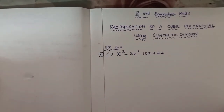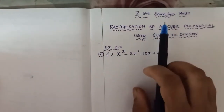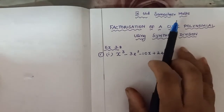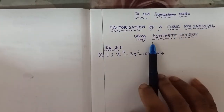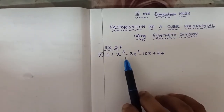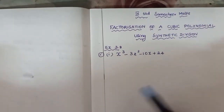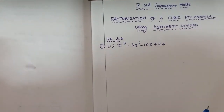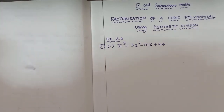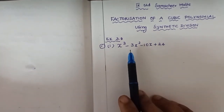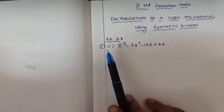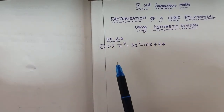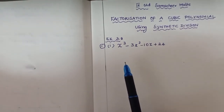Students, today we are going to see 9th standard Samacheer Maths factorization of a cubic polynomial using synthetic division. This is an important 5 mark question. It is a lengthy sum, but very very easy when you do it by understanding. The question is: factorize the following polynomials using synthetic division — Exercise 3.8, first subdivision. This is a very important 5 mark question when algebra is considered in 9th standard.